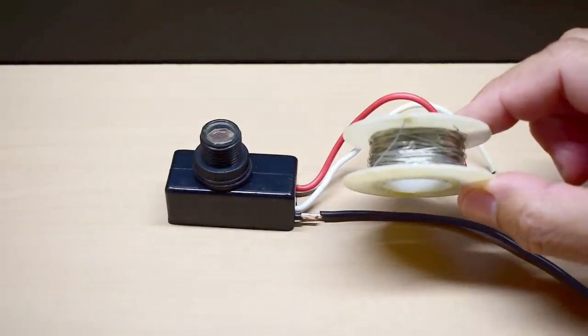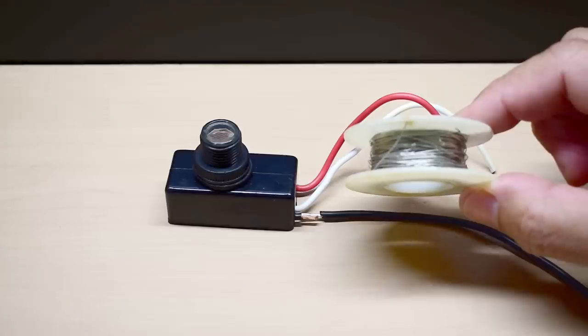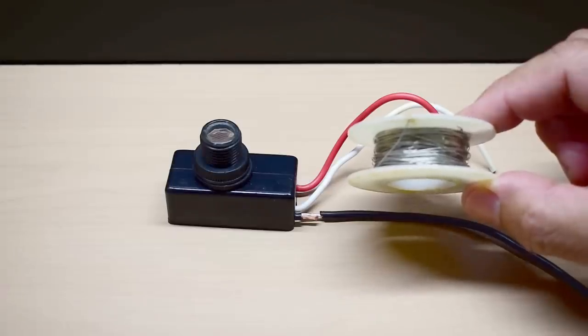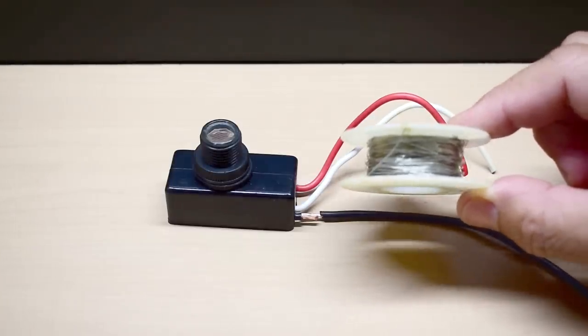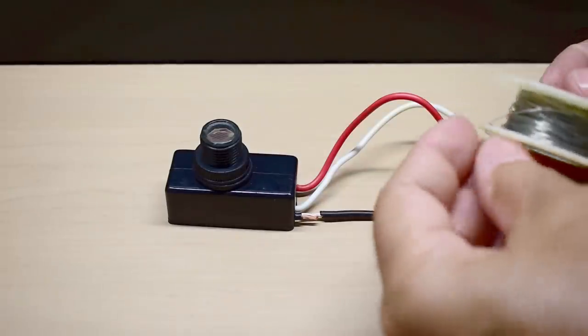You can also find this wire at a craft store such as Joanne Fabrics or Michaels. You go into the section where they have beads and you're going to see this kind of wire, copper, that's tinned. You're going to remove one foot.